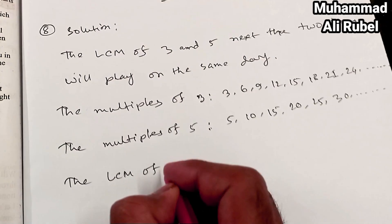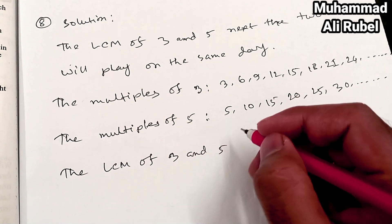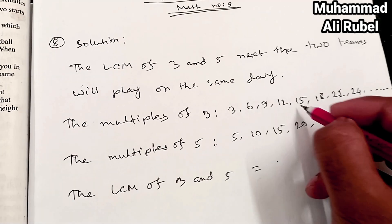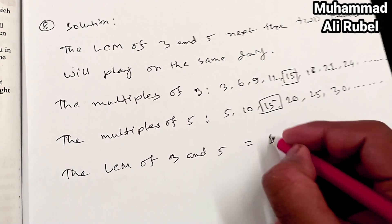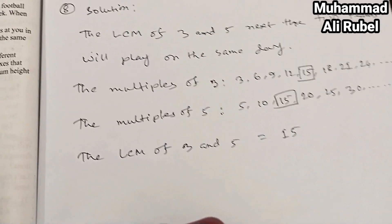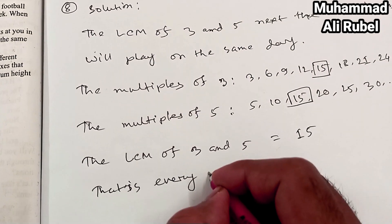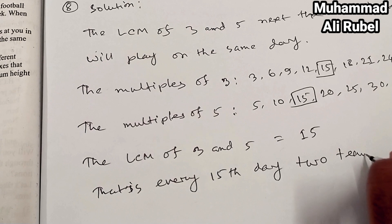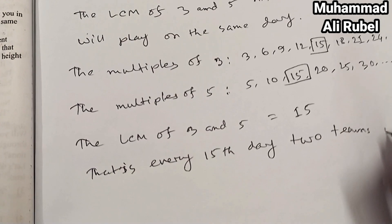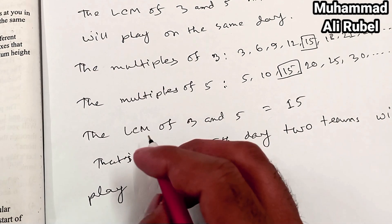The LCM of 3 and 5 equals the lowest common multiple, which is 15. So every 15th day, the two teams will play simultaneously on the same day.